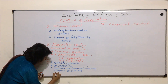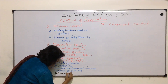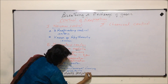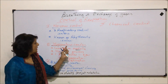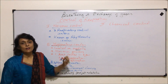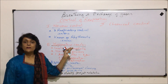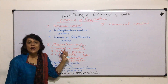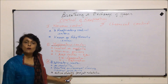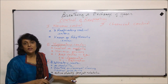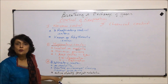The expiratory center gets stimulated when we are required to forcefully inhale or exhale. These muscles are normally active during exercise or during forceful exhalation. If you remember the breathing process, inhalation is an active process and normal exhalation is a passive process. During forceful exhalation, other muscles like internal intercostal and abdominal muscles contract and are responsible for forceful exhalation. That is controlled by the expiratory center.